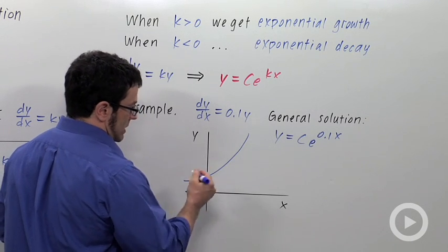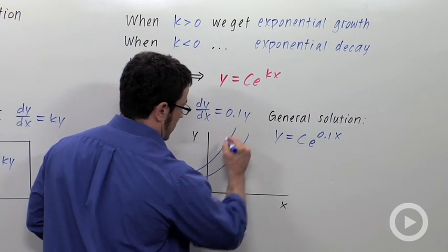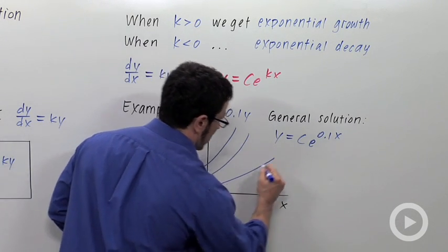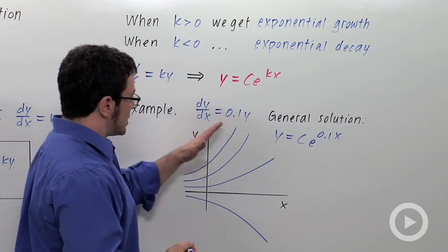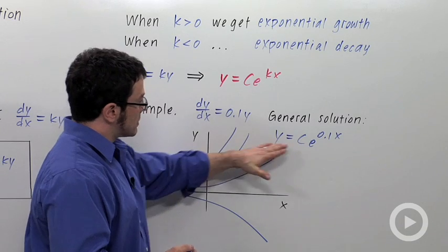And depending on the c value, you could get a steeper one or a lower one. And c could be negative, so you could get one down here. But these are all different functions for different values of c.